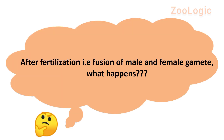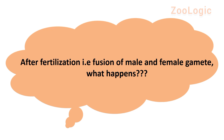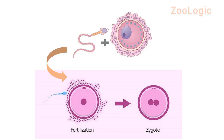Here a question arises: after fertilization — that is, the fusion of male and female gametes — what happens? You have five seconds to think about it and write your answers in the comment section below. The answer is very simple: fertilization leads to the formation of a zygote.